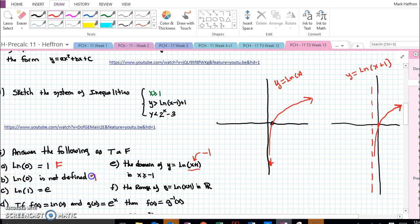ln of 0 is not defined, that's true. ln of 1 is E. ln of 1 is right here. ln of 0, I'm sorry, ln of 1 is 0. So that would be false.